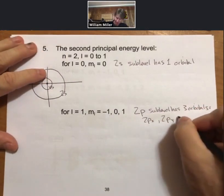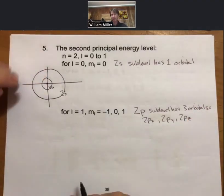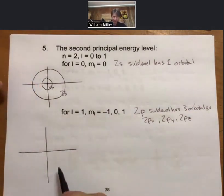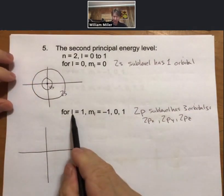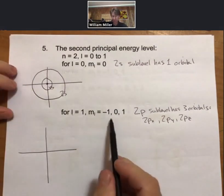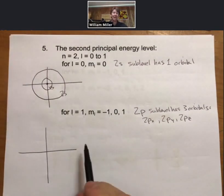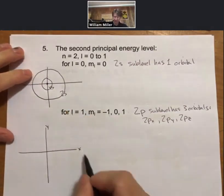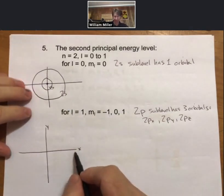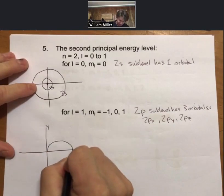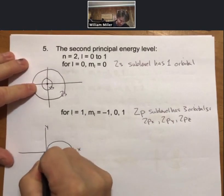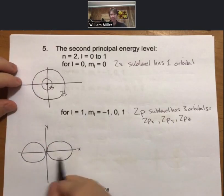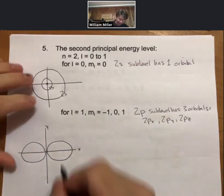And to show you what those look like, we'll draw a set of axes. And remember, L determines the shape, so all of these will have the same shape. And these numbers determine the orientation of those shapes. So I'm going to define my axes as X and Y. And 2Px is going to be dumbbell shapes, or balloon shapes, two of them along the X axis. And this is going to be 2Px.